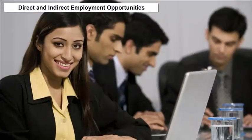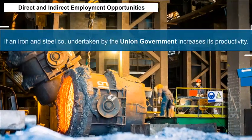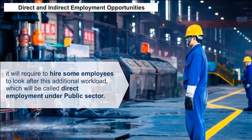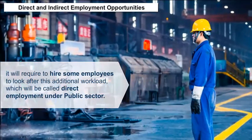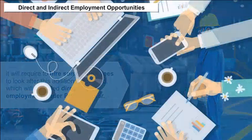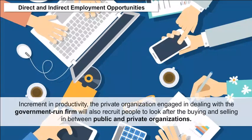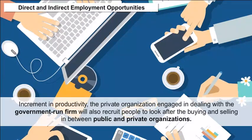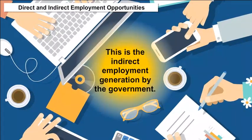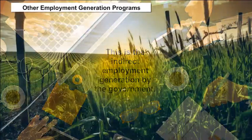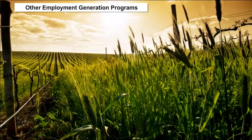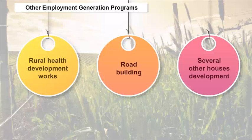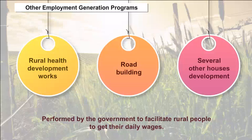Direct and Indirect Employment: For example, if a government-run iron and steel company increases its productivity, it will need to hire employees to manage the additional workload — this is direct employment under the public sector. Due to this increment in productivity, private organizations dealing with the government firm will also recruit people to manage buying and selling between public and private organizations — this constitutes indirect employment generation by the government. The government has also undertaken rural health development works, road building, and housing development to facilitate rural people in earning their daily wages.